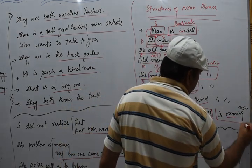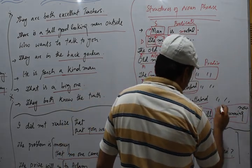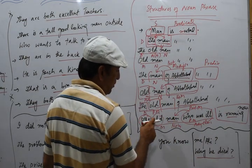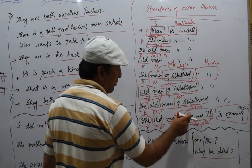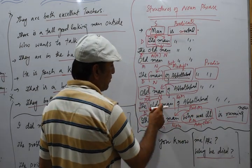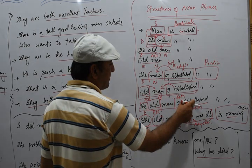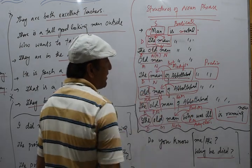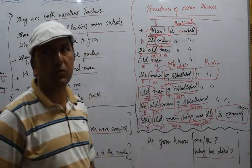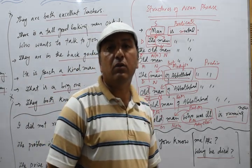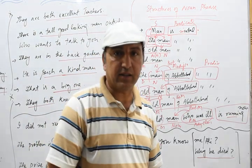So these are structures: 'the old man who was ill' is one structure, 'the old man of [the village]' is another structure. These are different structures of a noun phrase.